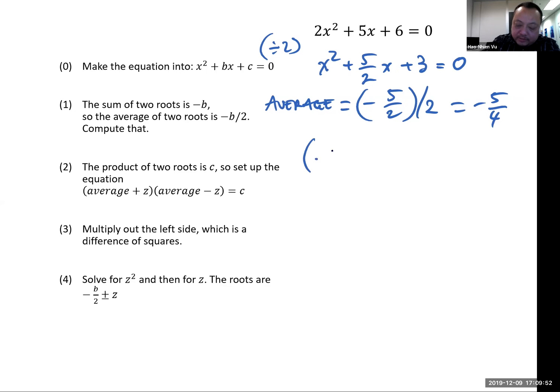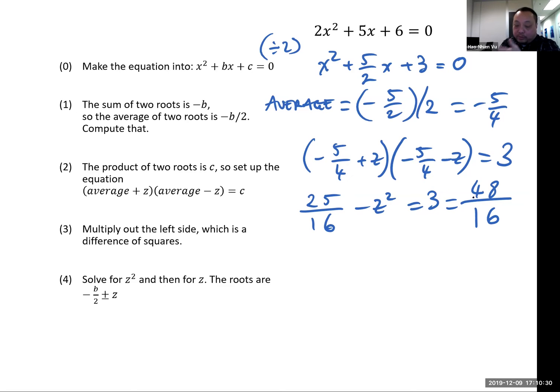And again, I set up the equation as the average plus some z times the average minus same z is equal to the new c, which is 3. Again, multiply out the left side, I get 25 over 16 minus z squared equals to 3. I know I'm going to need common denominators. So 3 is 48 over 16. 3 times 16 is 48.